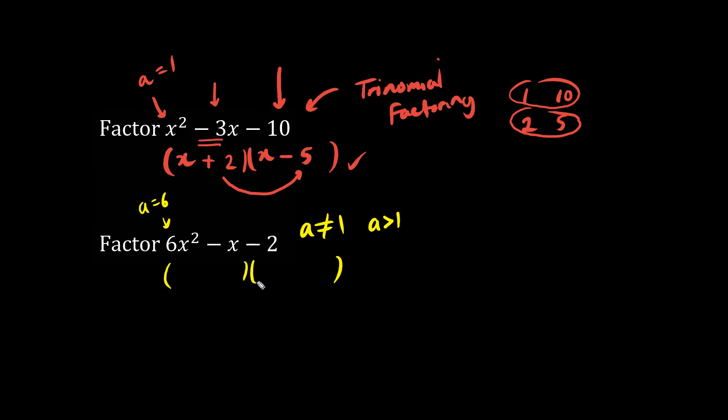When the numbers are small, this could arguably be faster. What times what becomes 6x squared? Now it could be 6x times 1x, or it could be 2x times 3x. So we're not quite sure, but we're going to guess. Why don't we try guessing with 2x times 3x is 6x squared. So 3x times 2x is one possible answer.